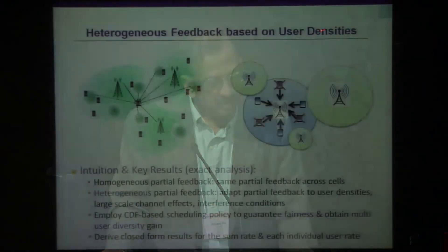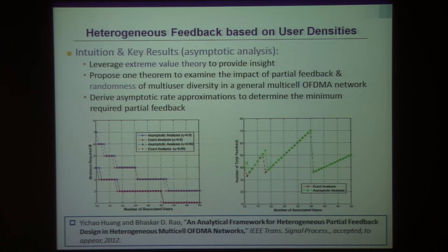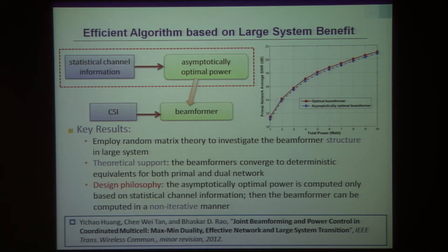The same idea applies in a heterogeneous context: if we have access points at different densities, how do you use location awareness at the network level to do heterogeneous feedback? I will skip a few slides here — I apologize to Ichaw, who worked very hard creating these colorful slides.